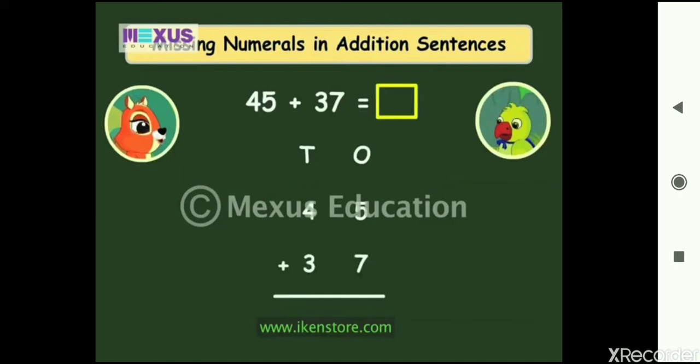I just have to find the sum of 45 and 37. I will write the numbers one below the other. Addition of the ones gives 12. I will write 2 in the ones place and carry over 1 to the tens place. Addition of the tens gives 8. So 45 plus 37 is 82.